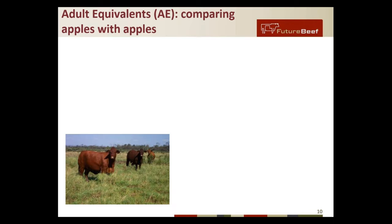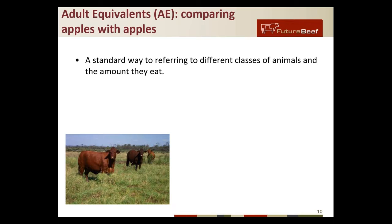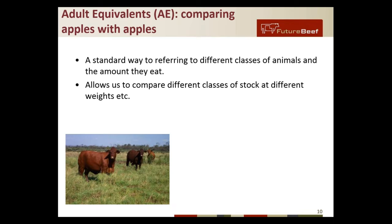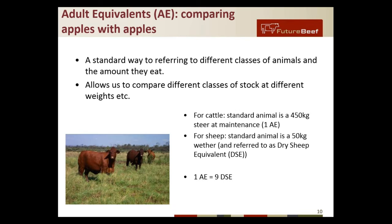Adult equivalents are a standard way to refer to different classes of animals and the amount that they will be eating, allowing us to compare these different classes with each other. For cattle, one adult equivalent is a 450-kilogram steer at maintenance — so that's not gaining or losing weight. For sheep, the standard animal is a 50-kilogram wether also at maintenance, and we call that a dry sheep equivalent or DSE. For anyone that needs to do the sum for both species, one AE equals nine DSE — so you could have one 450-kilo steer or nine 50-kilo wethers.